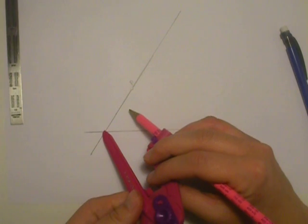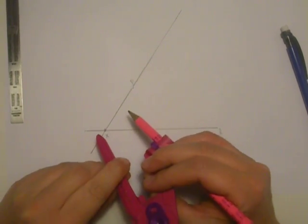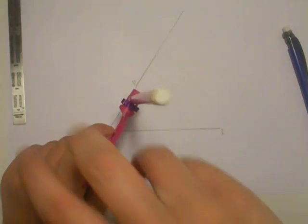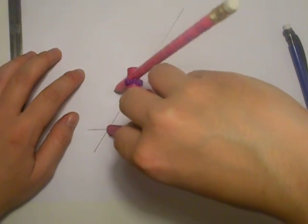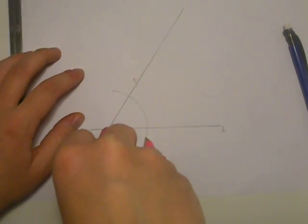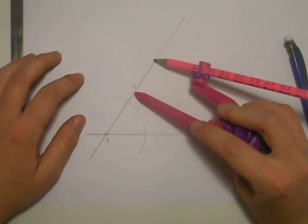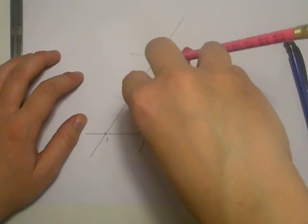We're going to take our compass, put it on X. It can be at any setting you like at this point. Pick a setting that is comfortable because you're going to have to use it again. We're going to put our point on X and draw an arc. We're going to keep it at that same setting and put our point on P and once again draw an arc.